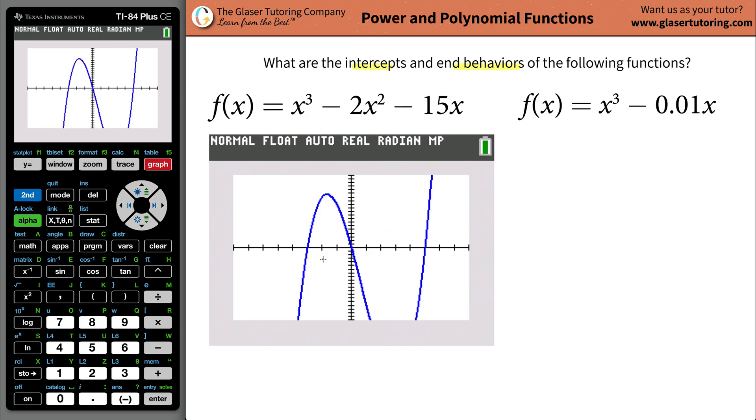So by using a graph now, how can we tell the intercepts and end behaviors? So first, let's look at the end behavior. End behavior is talking about what happens all the way out on the leftmost side of the graph, and then what happens all the way out on the rightmost side of the graph. That's what they mean by end behavior, what happens at the ends.